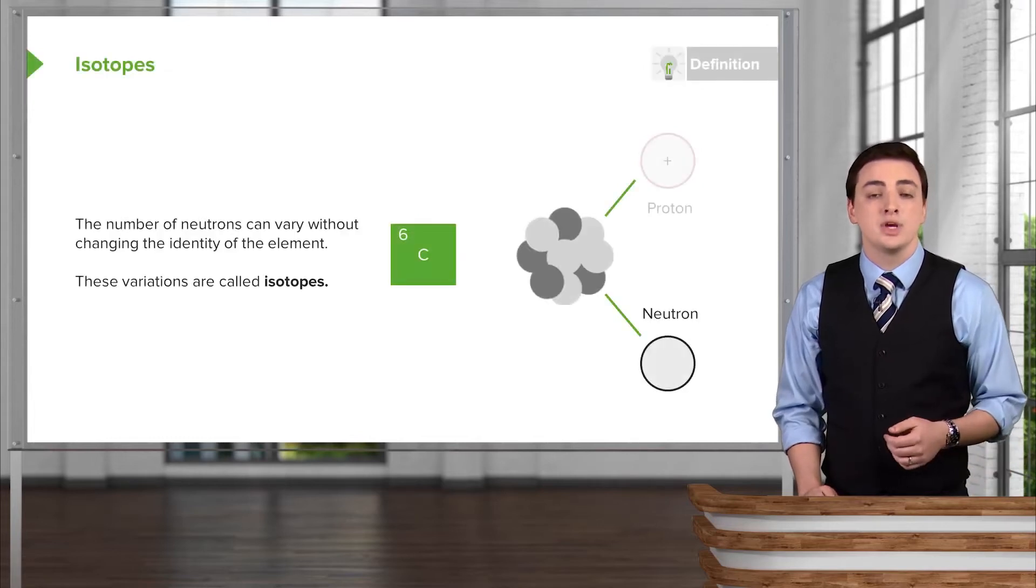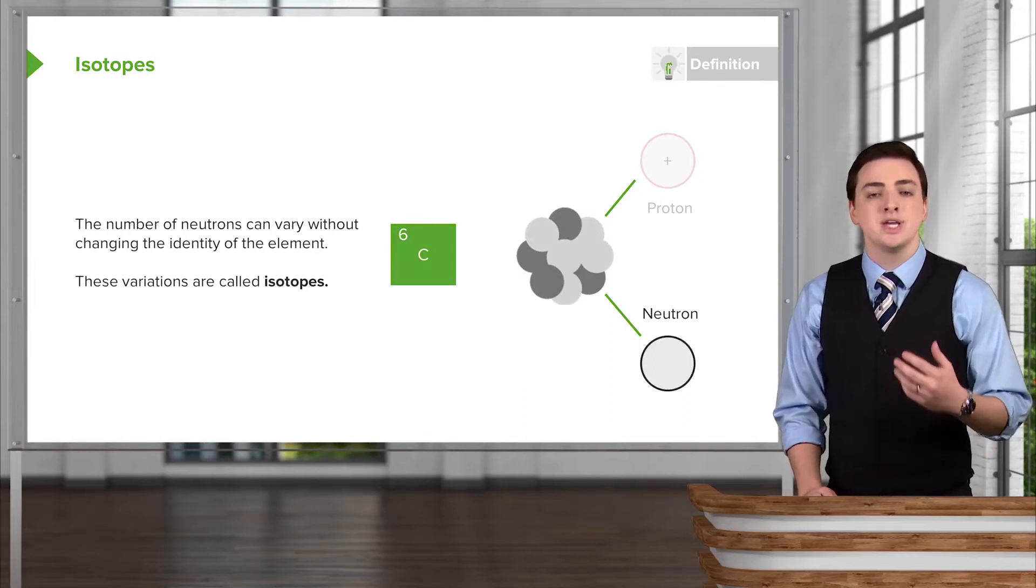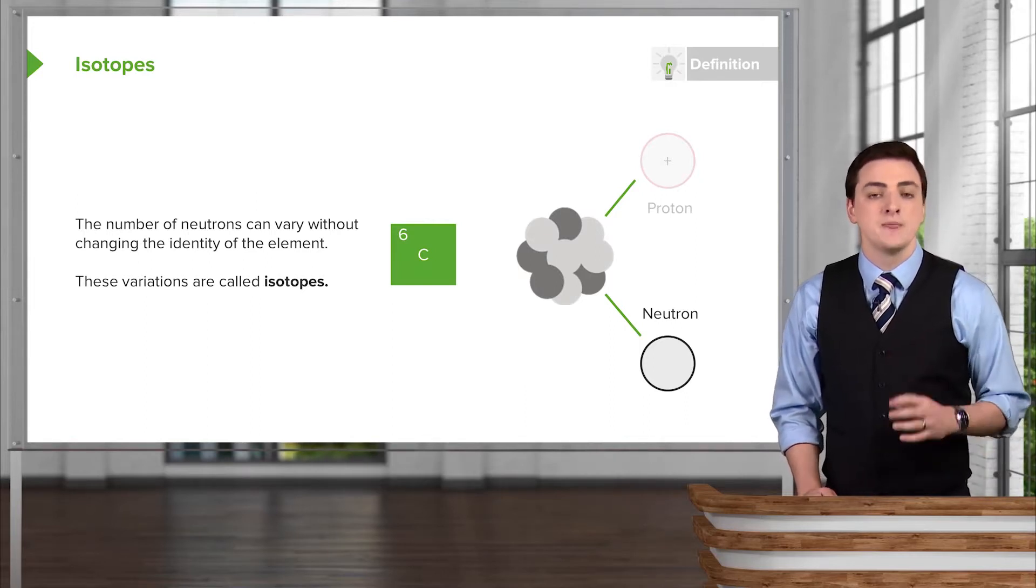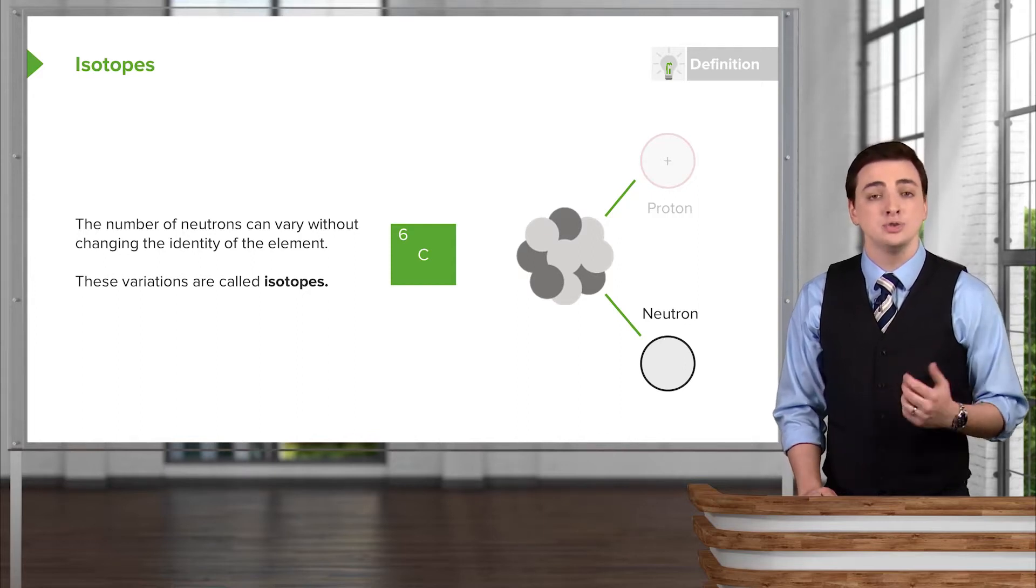On the other hand, we also have the number of neutrons in that nucleus. And the number of neutrons is not going to change the identity of the element. Instead we call them isotopes when we have a different number of neutrons in the nucleus.